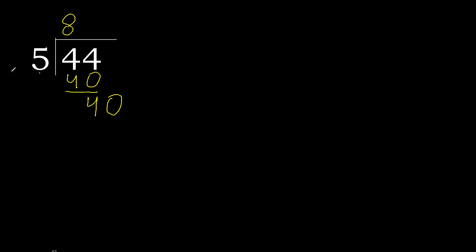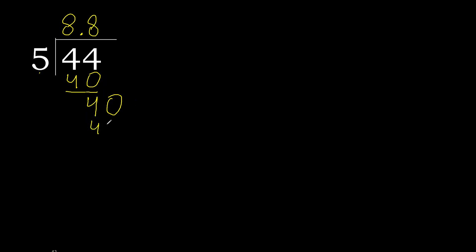Always complete with 0, here with a point. 0 point. 40 — 5 multiplied by 8 is 40, is not greater. 40 minus 40 is 0.